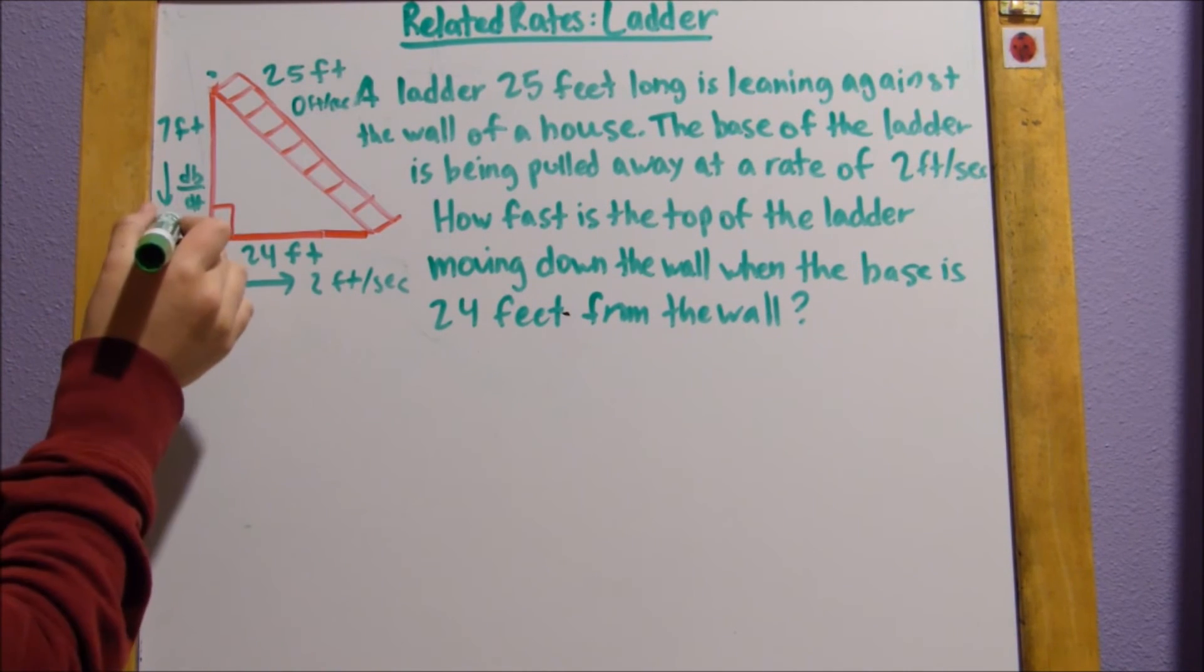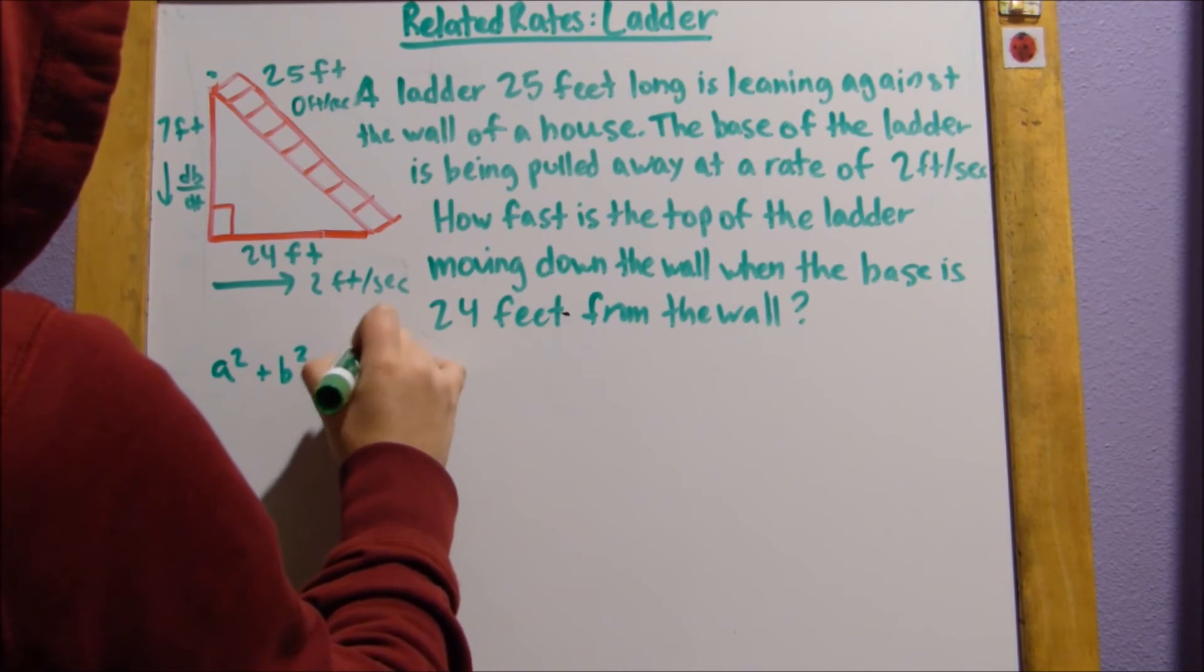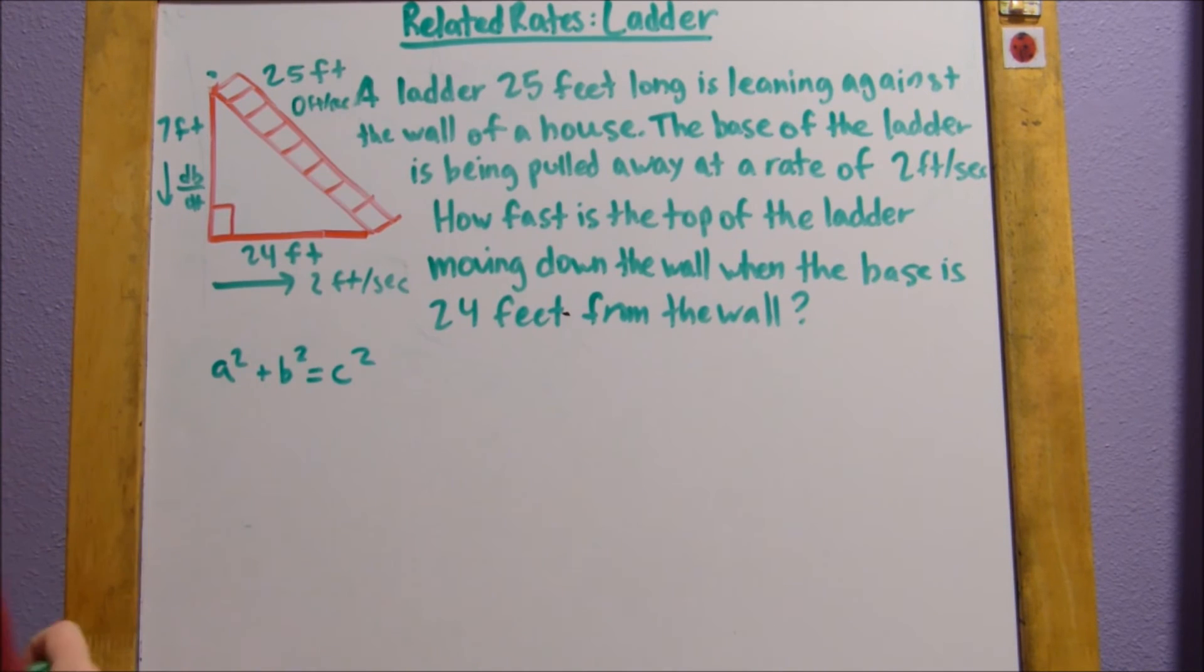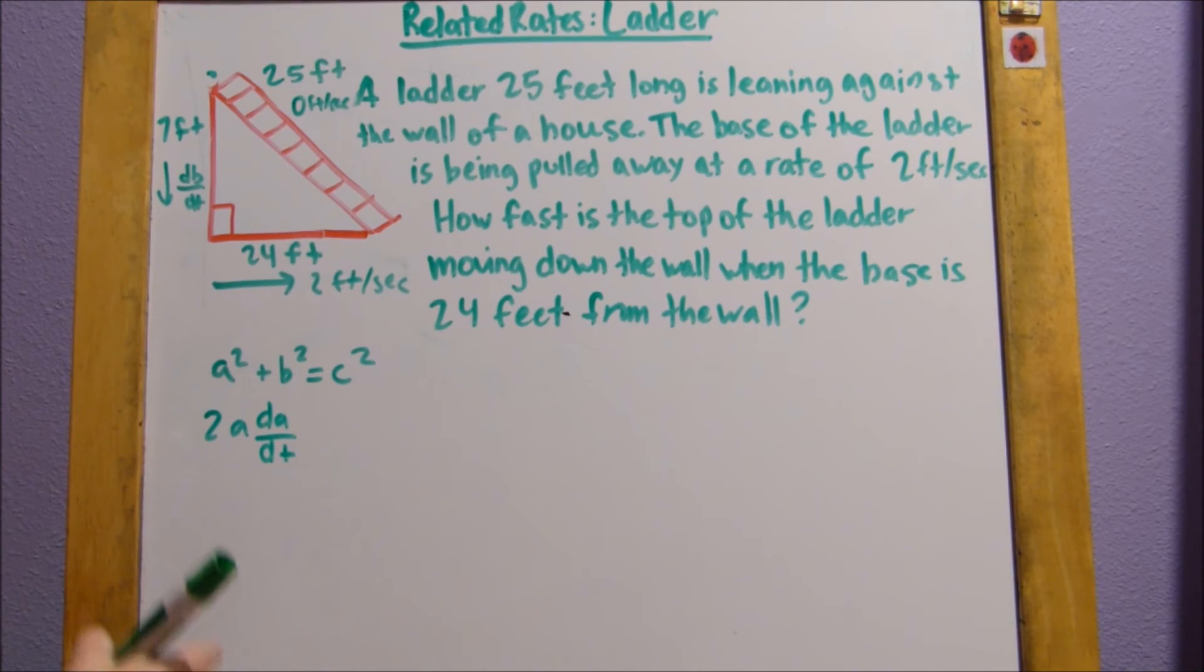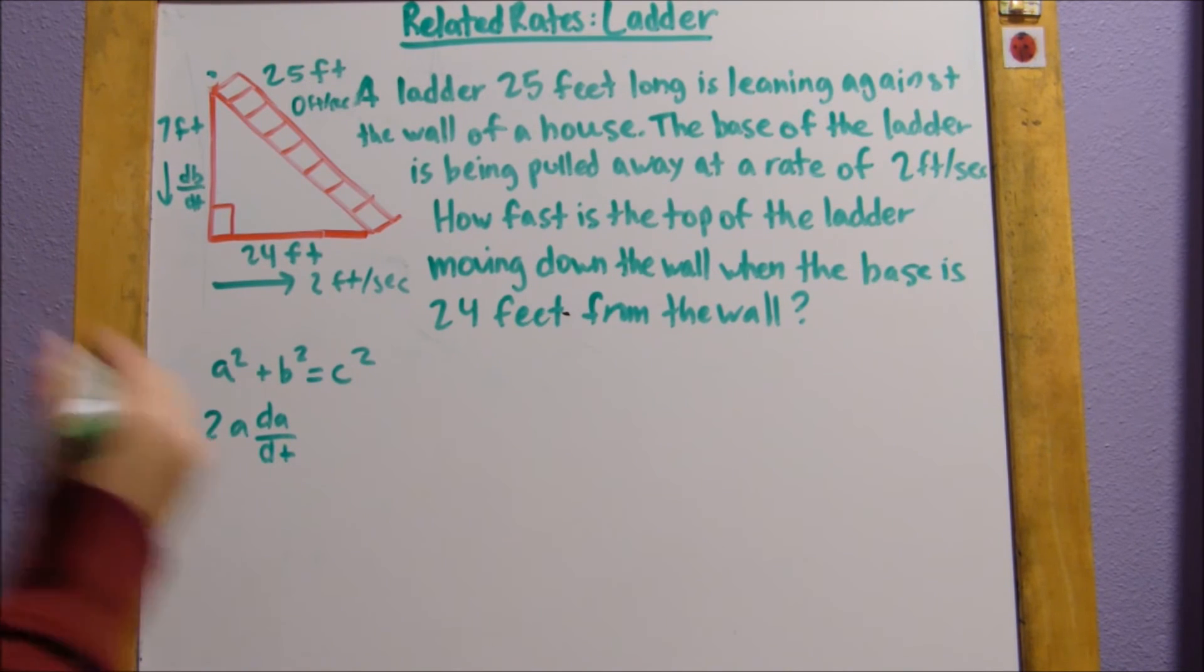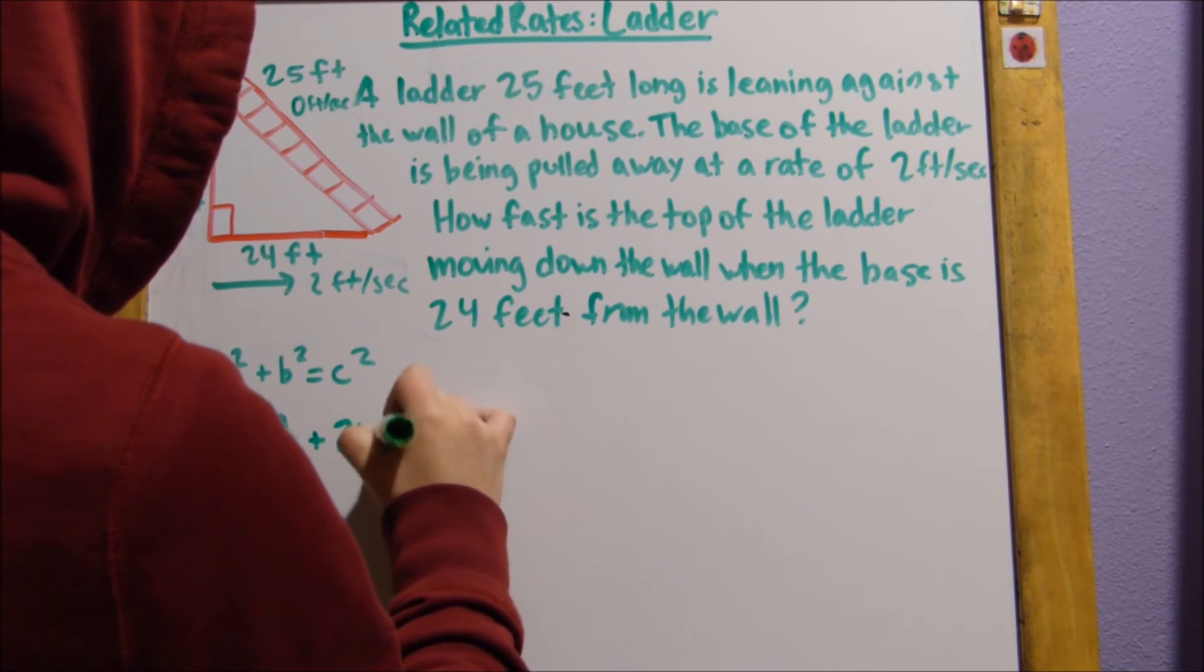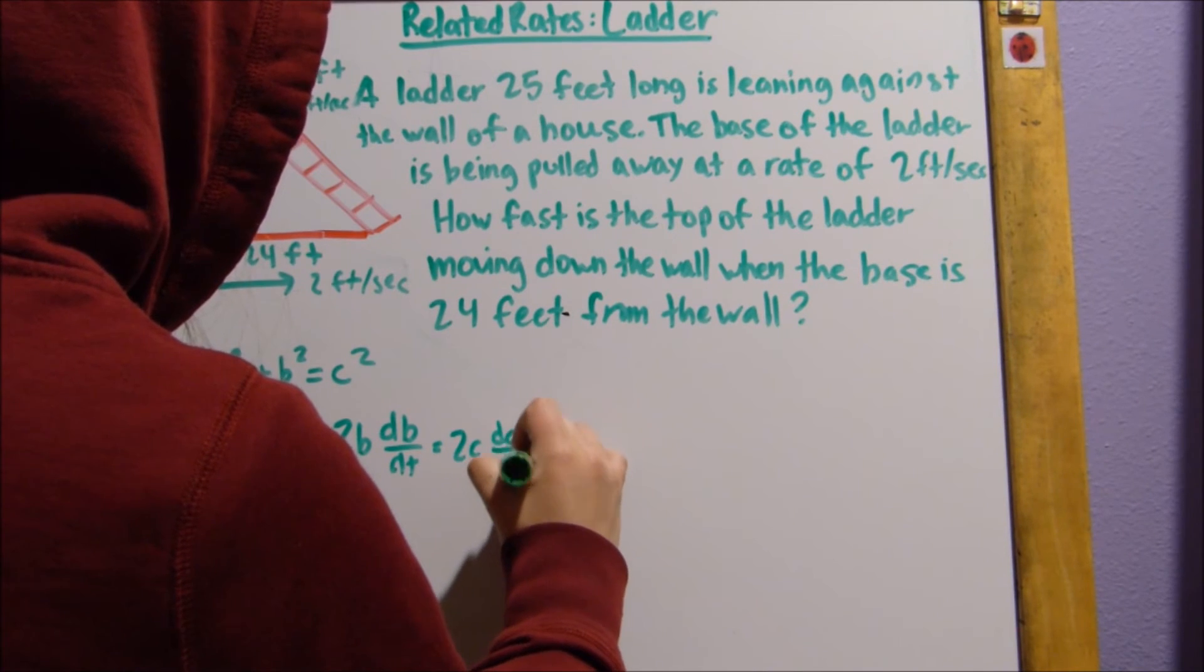So, the way to solve for this rate is we take the Pythagorean theorem, a² + b² = c², and we take the derivative of it. Before you plug in anything, you have to take the derivative. Because that's going to give us dA/dt, dB/dt, and dC/dt, which are rates, which is what we're solving for here. So, 2A dA/dt, and you have to derive this with respect to dt, plus 2B dB/dt equals 2C dC/dt.